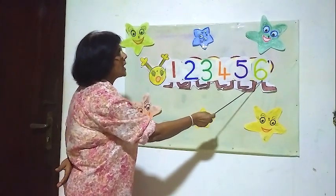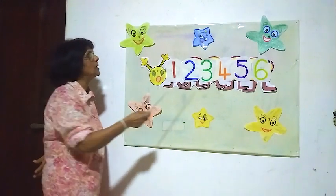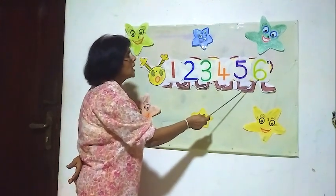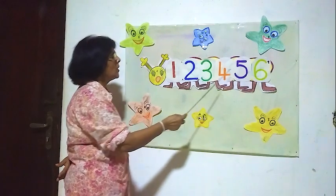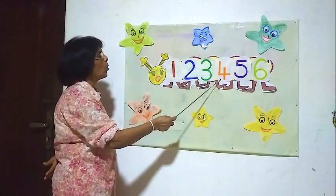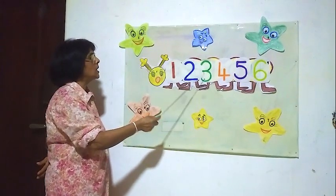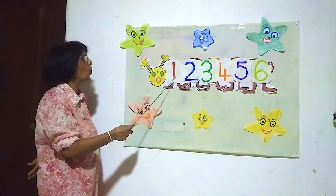Now from this side to this side we will read: six, five, four, three, two, one.